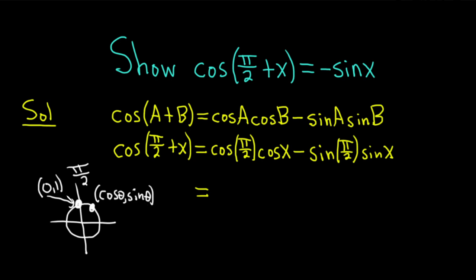So cosine is the x-coordinate of pi over 2. Cosine of pi over 2 is the x-coordinate there, so it's going to be 0 times cosine of x minus, and then the sine of pi over 2, that's the y-coordinate of pi over 2, so that's 1 times the sine of x.